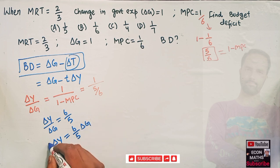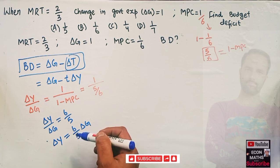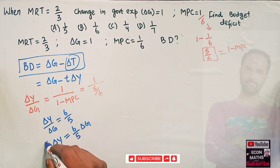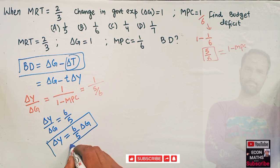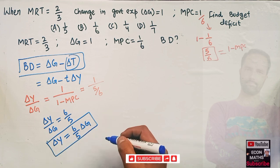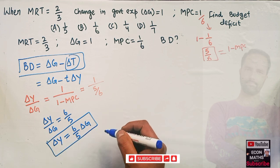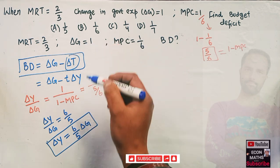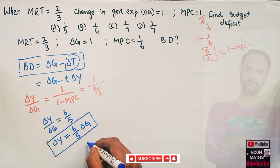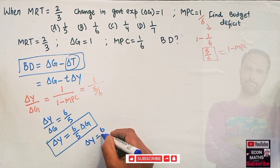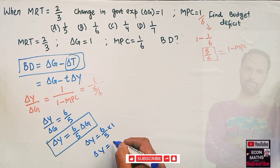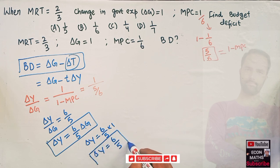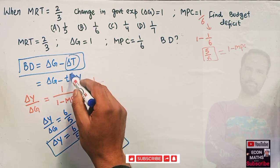This is our relationship between the change in income and change in government expenditure. Since ΔG is given as 1, we substitute: ΔY = (6/5) × 1 = 6/5. So we have the value of ΔY.